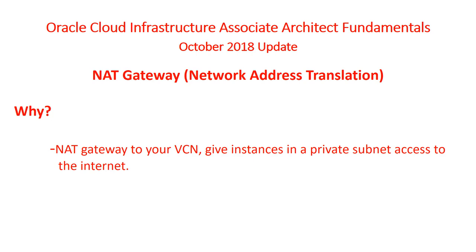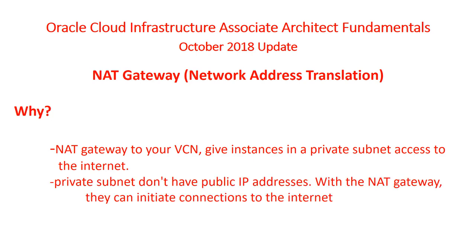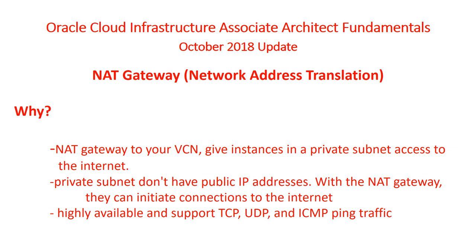But you are giving them a tunnel to access the internet if they need to. It could be to update the software on those systems, or it could be to send out error messages to the clients who are trying to access it. Private subnets don't have a public IP address, so with the NAT Gateway they can initiate connections to the internet. They are highly available and support TCP, UDP, and ICMP ping traffic.